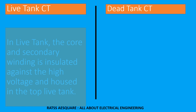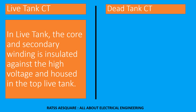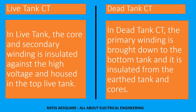In live tank CT, the core and secondary winding is insulated against the high voltage and housed in the top live tank. In dead tank CT, the primary winding is brought down to the bottom tank and it is insulated from the earth tank and cores.